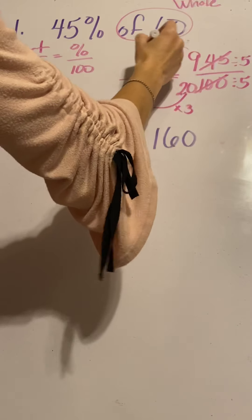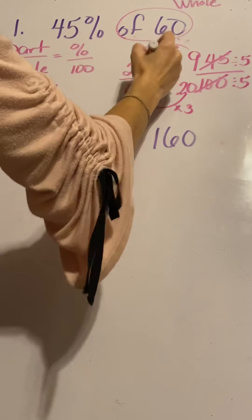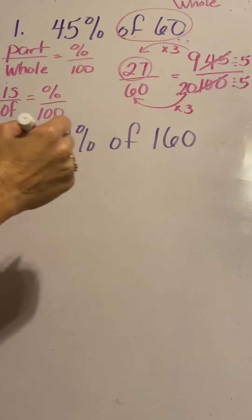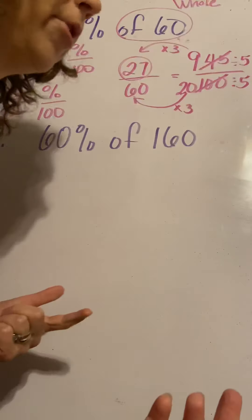And whatever you do to the bottom, you can do to the top. Times 3. 9 times 3 is 27. So 27 is your answer. And there's lots of different ways you can do these math problems, but I'm trying to keep it consistent with what we learned about ratios.